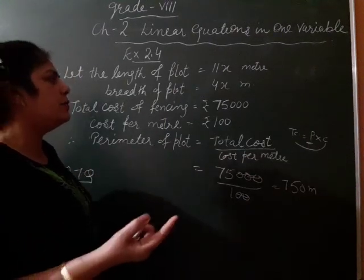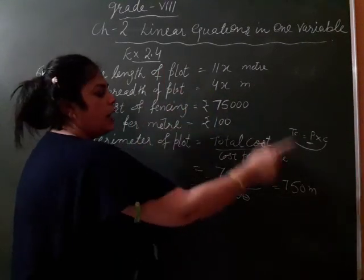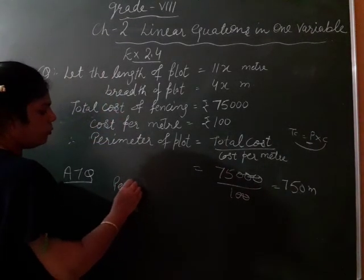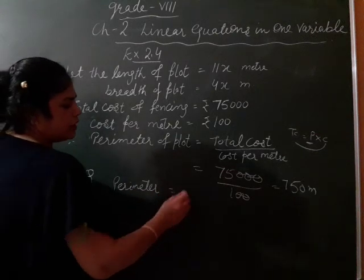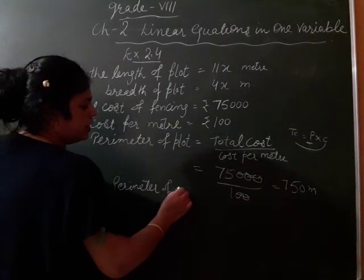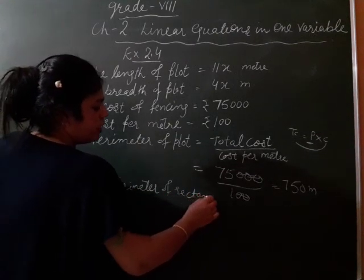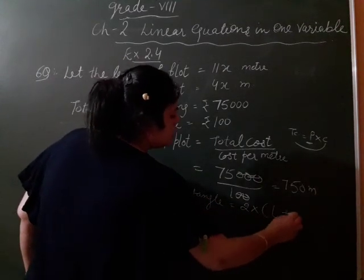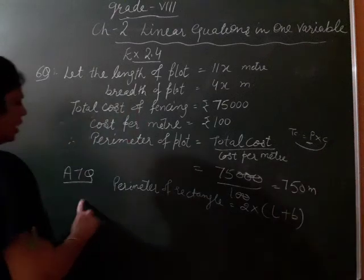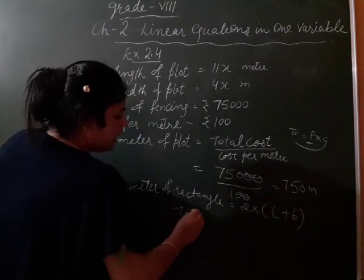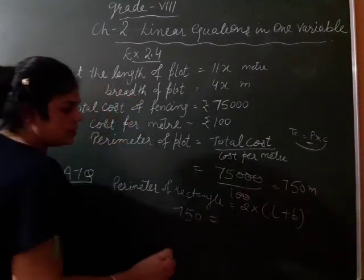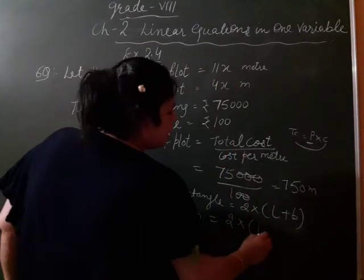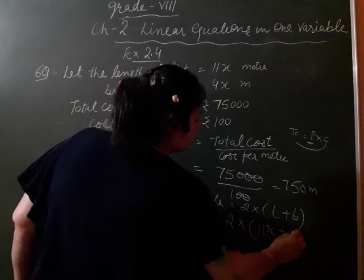We are finding its perimeter using these dimensions and using this value. So, perimeter of plot is, perimeter ka hamara formula kya hota hai rectangle ka? Perimeter of rectangle is 2 multiplied by length plus breadth. Here, you have perimeter is 750 and your dimensions are 2 into, what is our length? That is 11x. What is our breadth? That is 4x.